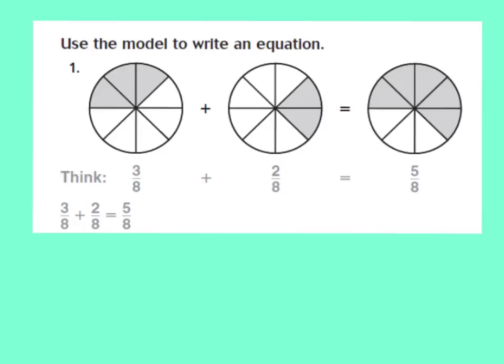If we look at number 1 in your GoMath book, you'll see that it's done for us already, but we're going to walk through it and figure out why we got the answers. The model is showing a circle cut into 8 equal parts, so the denominator is out of 8. I see that there are 3 shaded, so I have 3 eighths. Plus, I have the same circle cut into 8 equal pieces, and I have 2 pieces shaded. So I have 3 eighths plus 2 eighths.